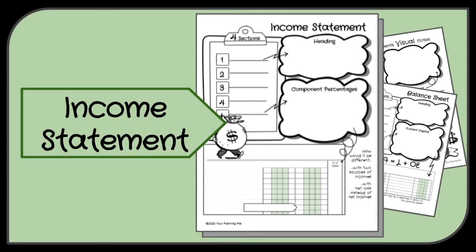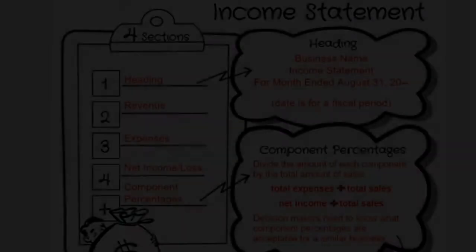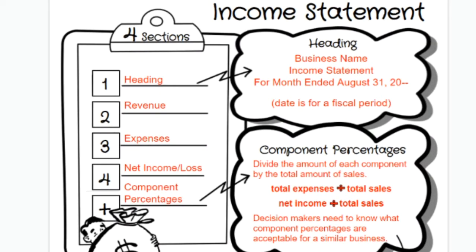Moving on to page two, this is all about the income statement. The income statement has four sections: the heading, revenue, expenses, and net income or loss, plus a bonus section for component percentages. The heading includes the business name, the name of the document, and the date — but since it covers a whole fiscal period, you write it as 'for month ended,' 'for quarter ended,' or 'for year ended,' followed by the actual end date.